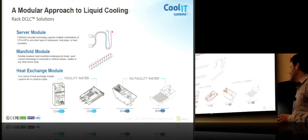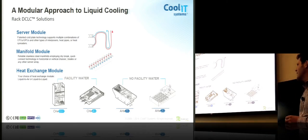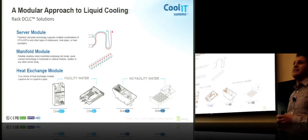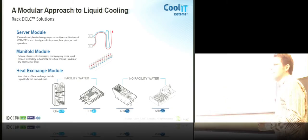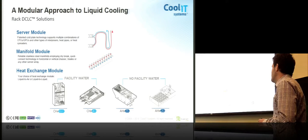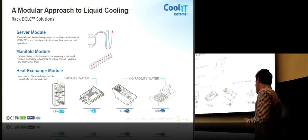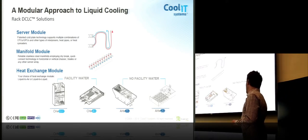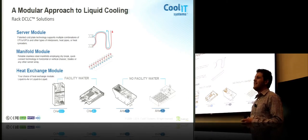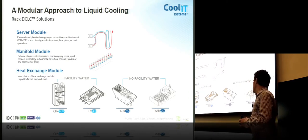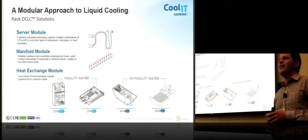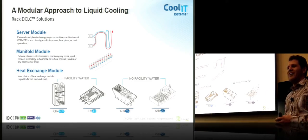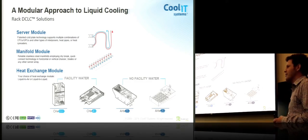On the left you have our CHX, our coolant heat exchanger line of products. And these are for when you can bring facility water or at least plumbing onto the data center floor. Whether it's above the racks or below the racks, it does require a liquid-to-liquid heat exchanger, so plumbing onto the white space. If you do not want to bring liquid onto the white space, but you still want to take advantage of the performance and density that liquid cooling allows, we do have our AHX line of products, and these evacuate that load back into the data center room.